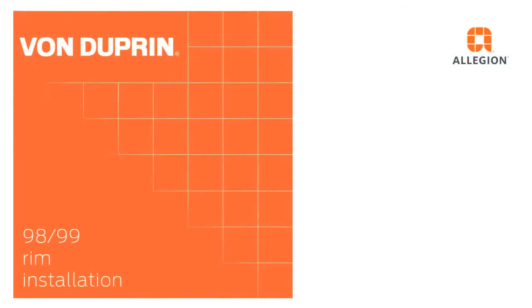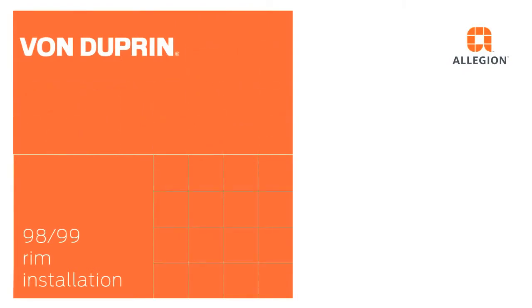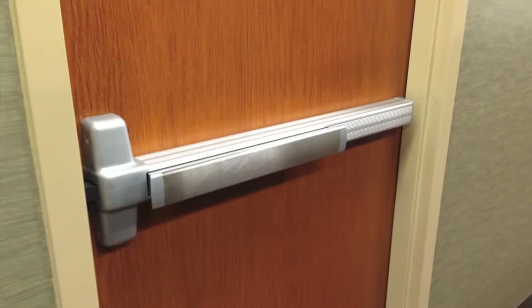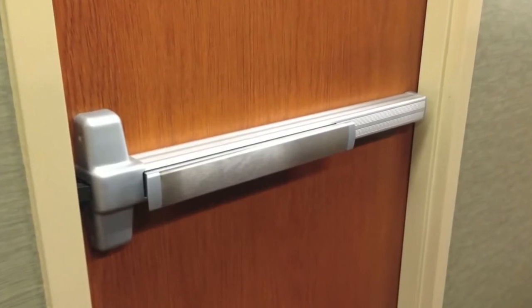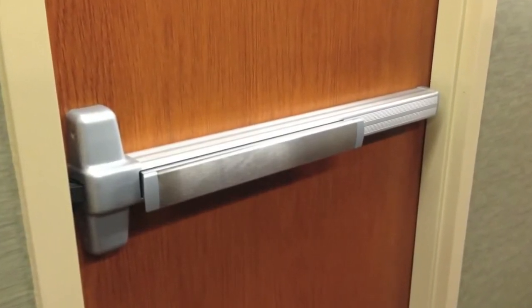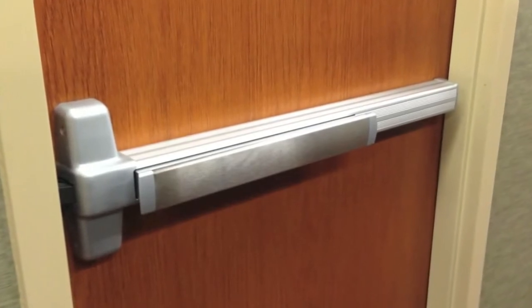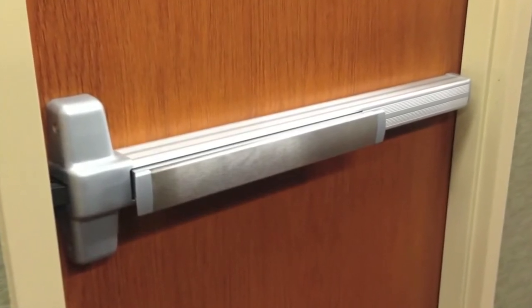In this video we will demonstrate how to install the Von Duprin 98-99 rim exit device. We will install a standard 99 rim fire device with a blank escutcheon lever trim on a fire-rated hollow metal door that has been prepped according to Von Duprin templates.